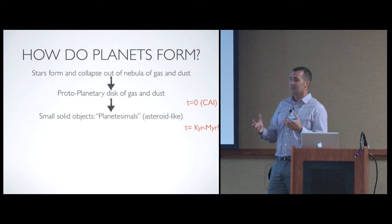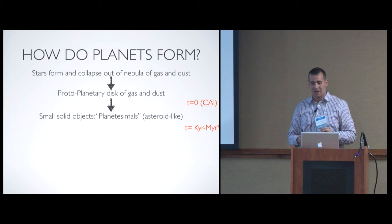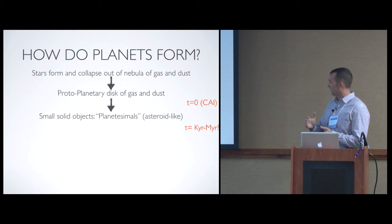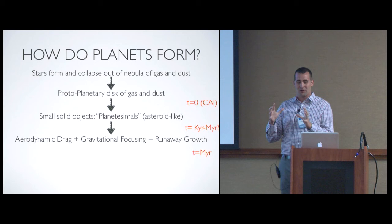Eventually through some process that's not really well understood, you're going to start to form small asteroid-like objects out of this dust. It's potentially gas drag of these small millimeter-sized pebble-like objects, but that has to happen in thousand to million-year timescales. You're going to form these small planetesimals, which are these asteroid-like objects.